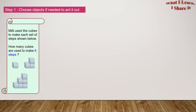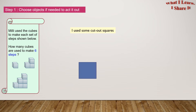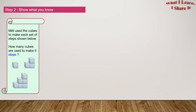Let's apply the act it out strategy here. Step 1: Choose objects if needed to act it out. I used some cut-out squares. Step 2: Show what you know.